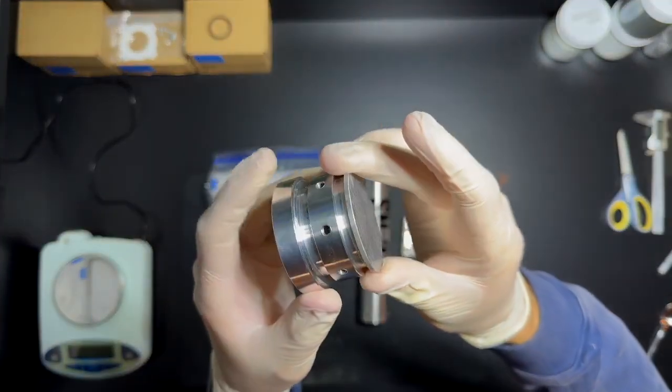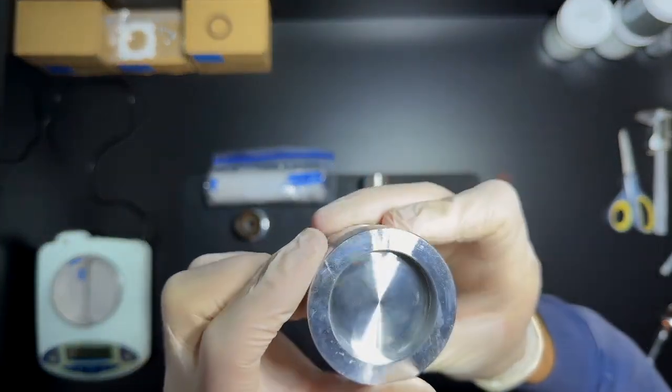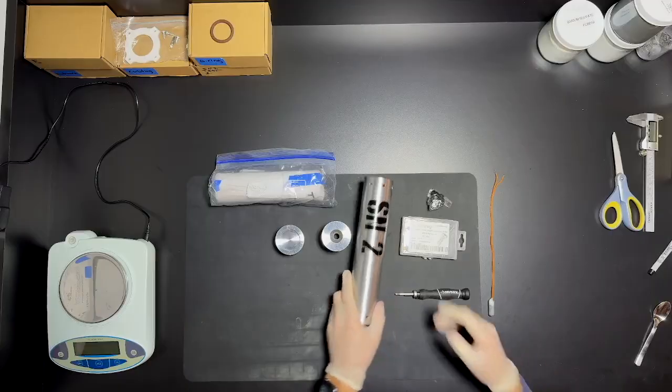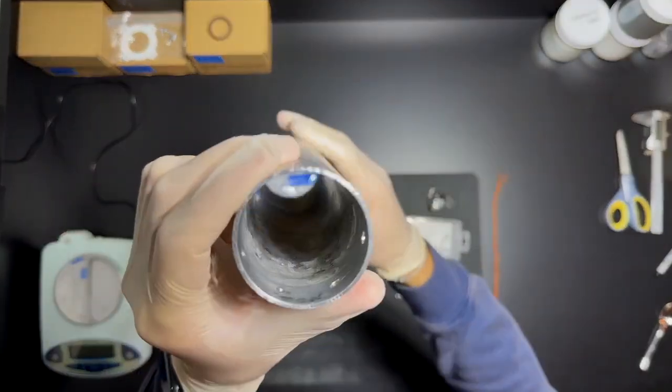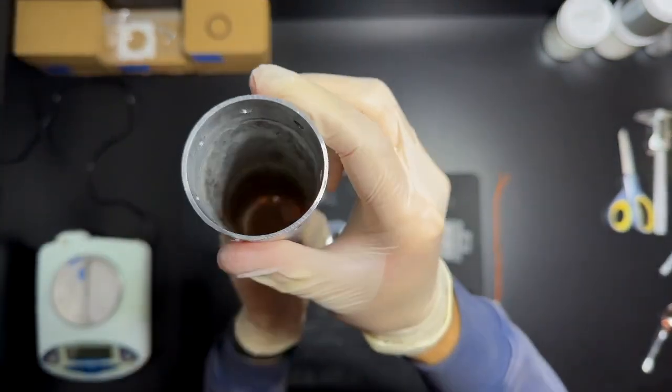Here's the forward closure, and I also add o-rings to it. And here's the rocket casing. It's been through a few static fires so far, so it is a little dirty on the inside.